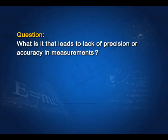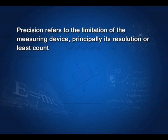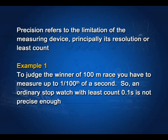We may ask: what is it that leads to lack of precision or accuracy in measurements? Let us first see the distinction between precision and accuracy. Precision refers to the limitation of the measuring device, principally its resolution or least count. For example, to judge the winner of a 100 meter race, you have to measure time to the accuracy of 1/100th of a second. So an ordinary stopwatch with a least count of 0.1 second is not precise enough.